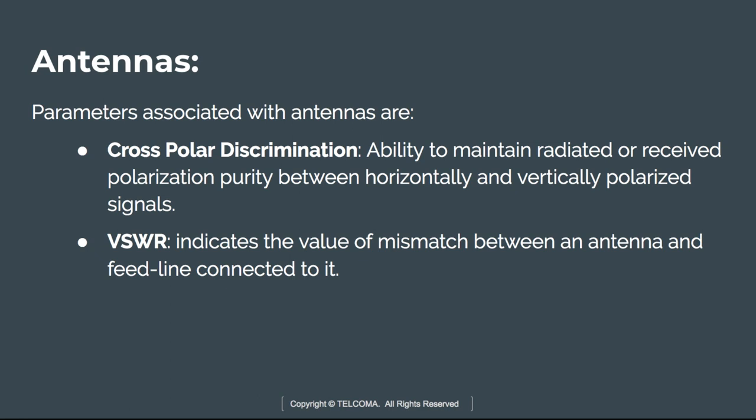The next parameter is cross polar discrimination (XPD), also measured in decibels. It defines how much signal energy is transmitted in the correct polarization — that is, it tells the ability to maintain radiated polarization purity between horizontally and vertically polarized signals. It is the difference between the peak of the co-polarized main beam and the maximum cross-polarized signal over an angle twice the 3 dB beam width.